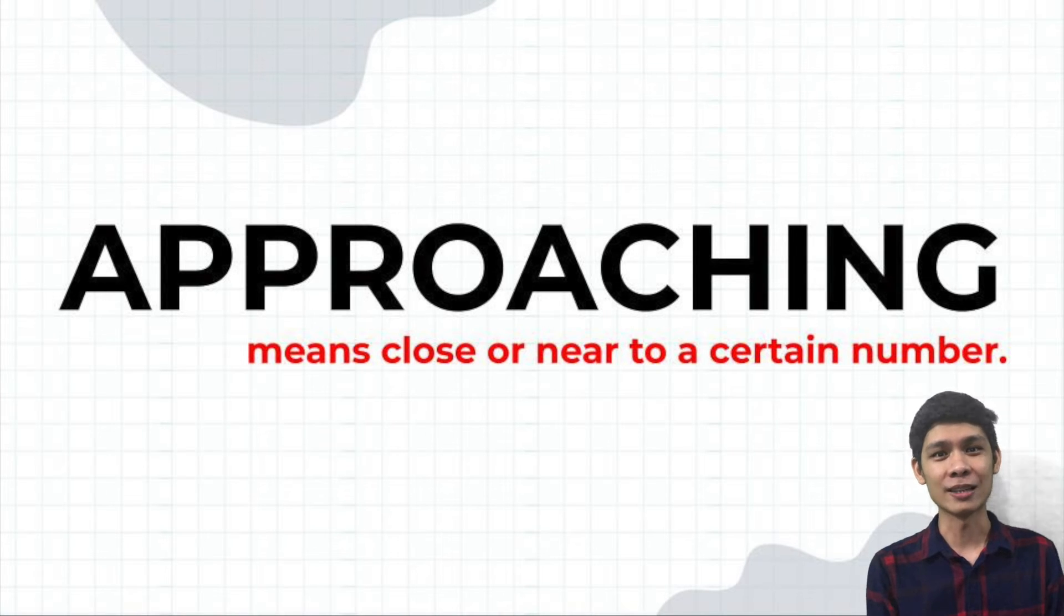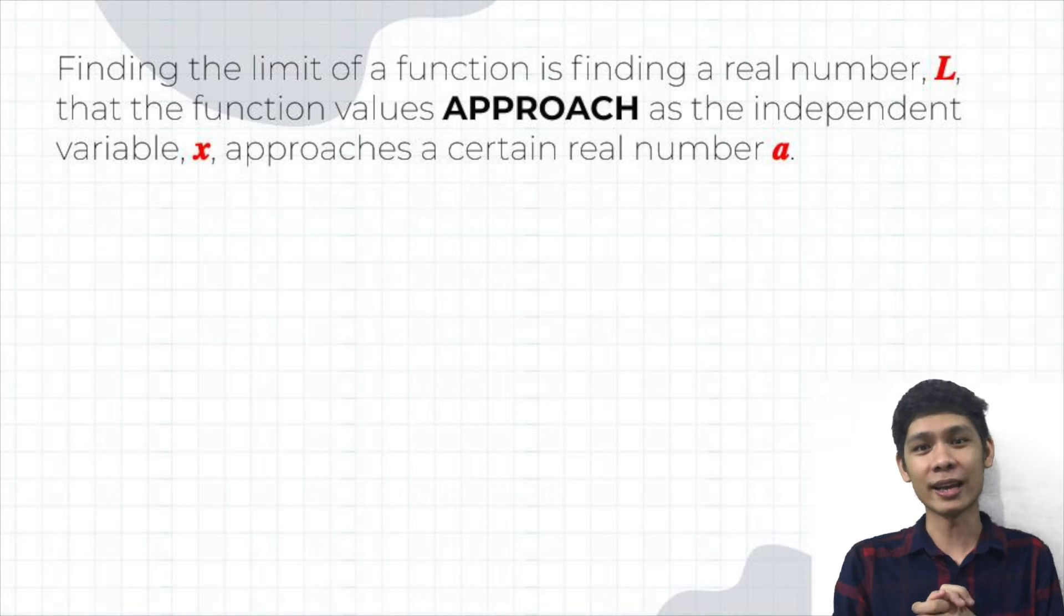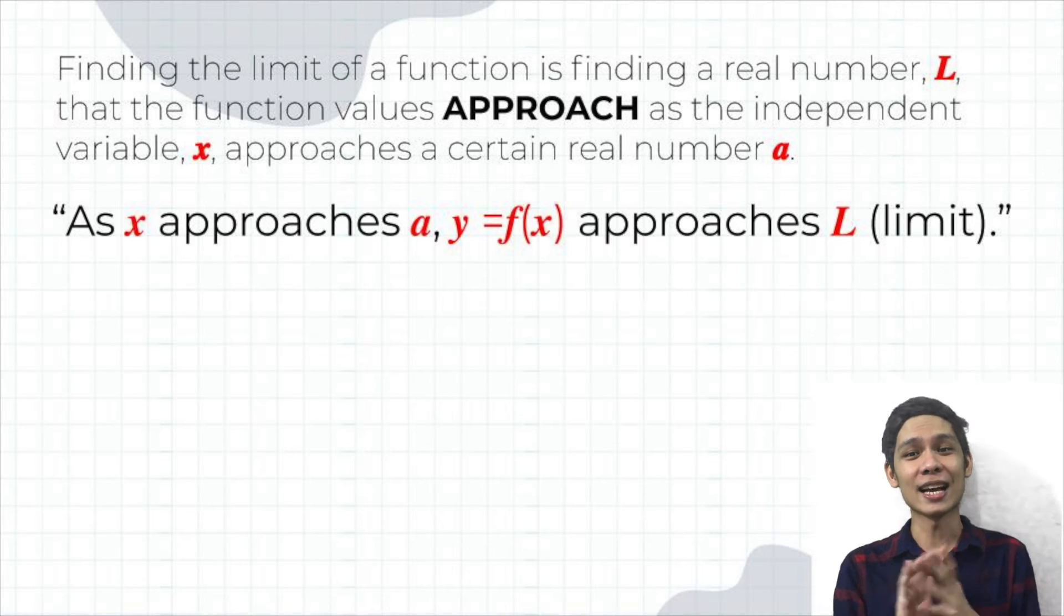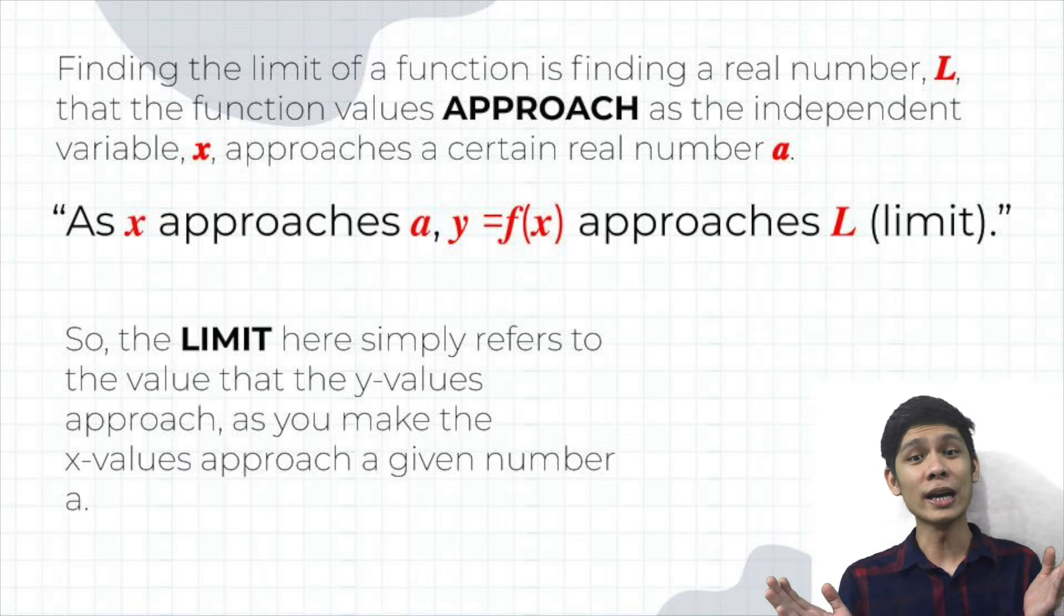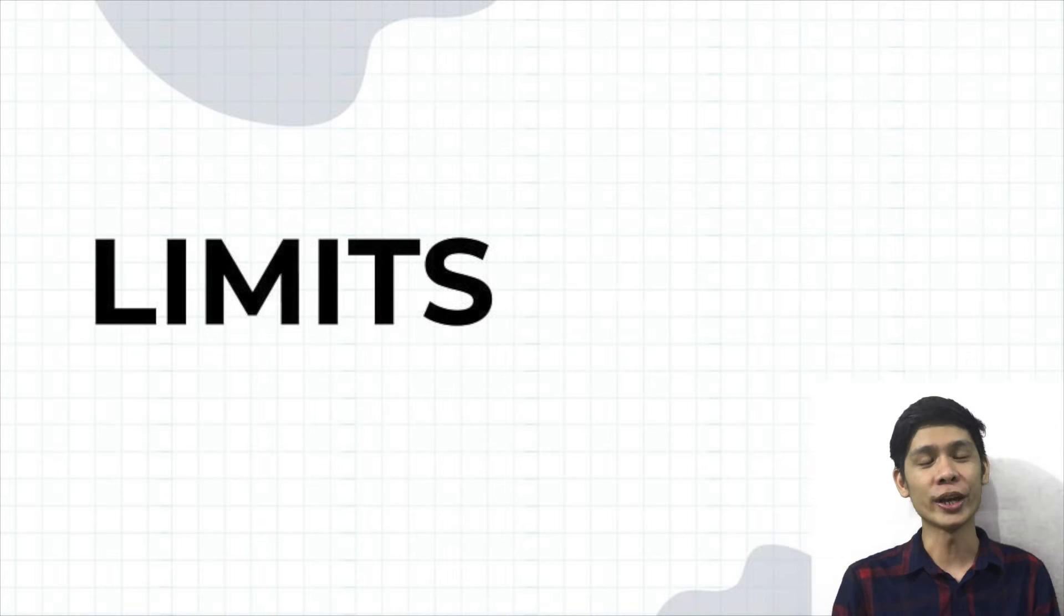Now let us apply this to functions. Finding the limit of a function is finding a real number L that the function values approach as the independent variable X approaches a certain real number A. In short, as X approaches A, Y or f(x) approaches the limit L. So, the limit here simply refers to the value that the Y values approach as we make the X values approach a given number A. And remember, we can illustrate limits using different approaches.